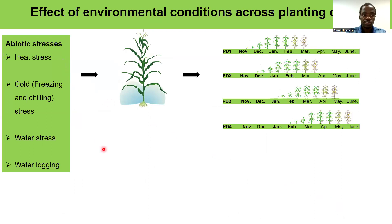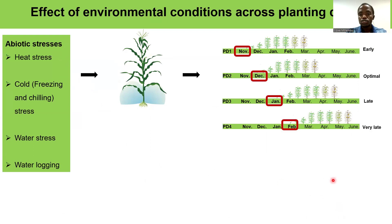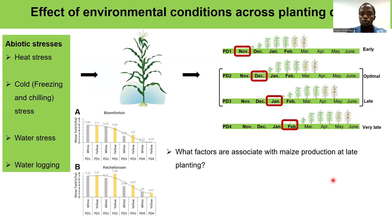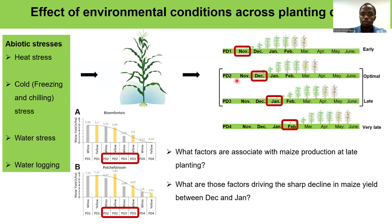These fluctuations are due to abiotic stresses, and these factors affect maize during the planting season. We introduced planting trials to assess and analyze the effect of these factors on maize at different planting dates. What we observed is that between planting date two and planting date three, there is a significant decline in maize yield, irrespective of the location where it is planted.